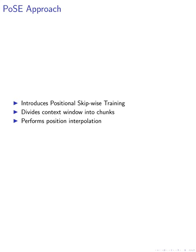We propose an approach called Positional Skip-wise Training (POSE). This method involves dividing the original context window L_C into N chunks and assigning starting indices. We then sample skipping bias terms for each chunk to transform the original position indices. We select continuous spans of tokens from the input text for each chunk and perform position interpolation for stabilized fine-tuning.